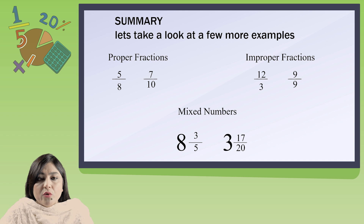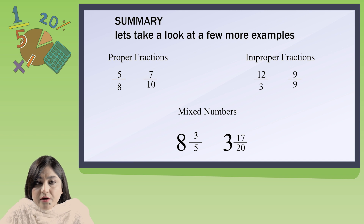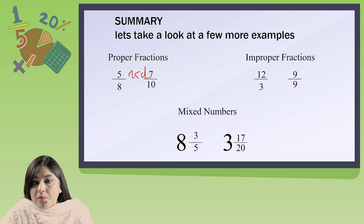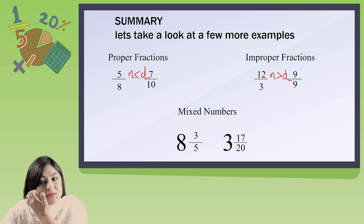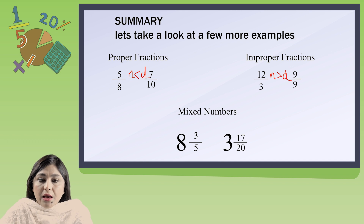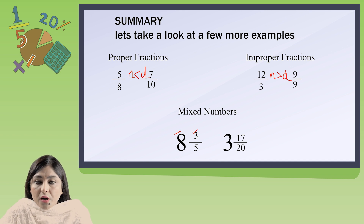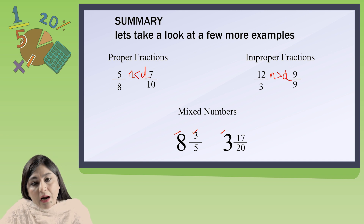Let's look at a few more examples. Proper fractions: 5 by 8 and 7 by 10 — because the numerator is less than the denominator; 5 is less than 8. Improper fractions: 12 over 3 and 9 by 9 — because the numerator is greater than or equal to the denominator. Mixed numbers: 8 and 3 by 5, and 3 and 17 over 20 — each contains a whole number and a fraction part.